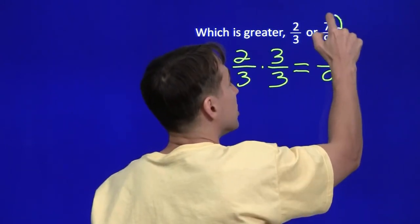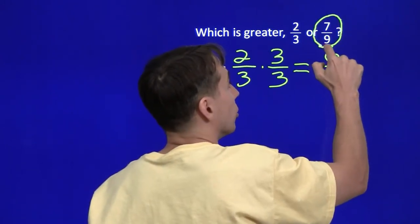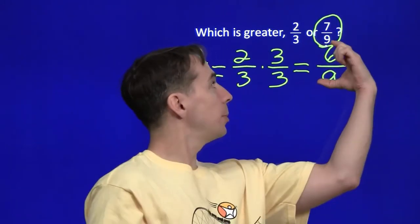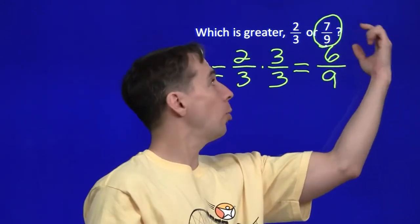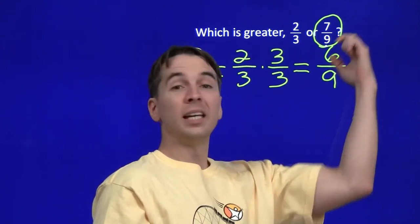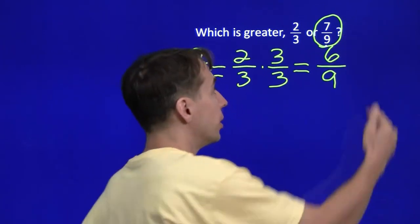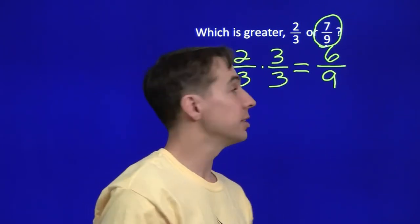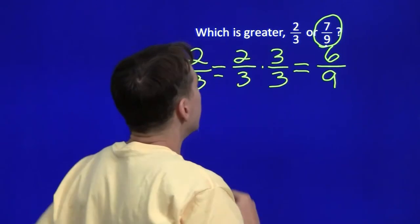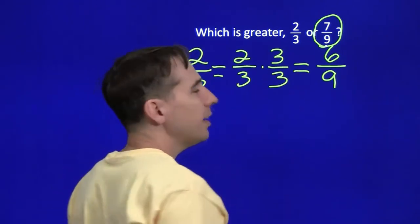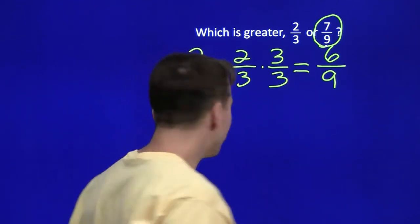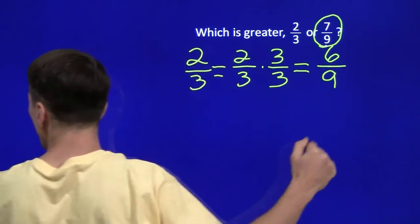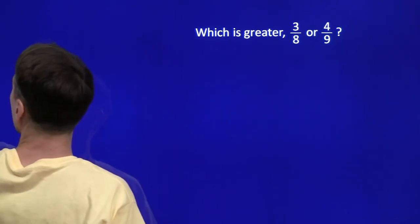Now we can see which is larger. Once the denominators are the same, all we have to do is compare the numerators, and we see that seven-ninths is greater than six-ninths. So we know how to handle fractions with different denominators.